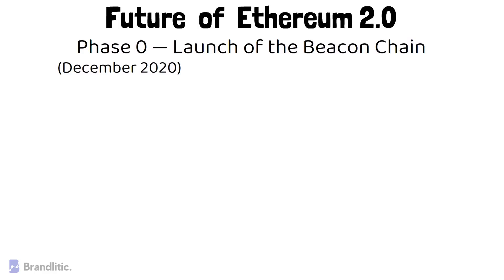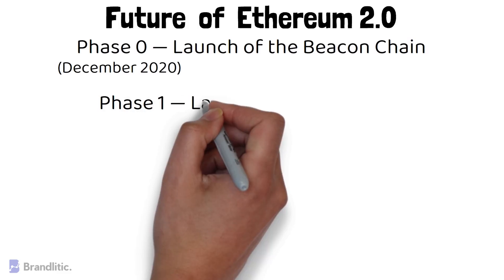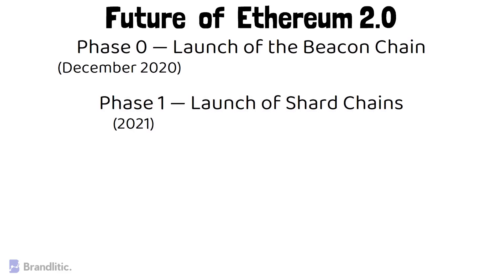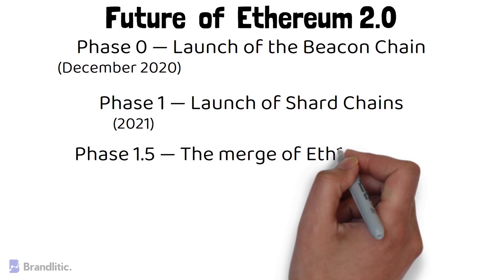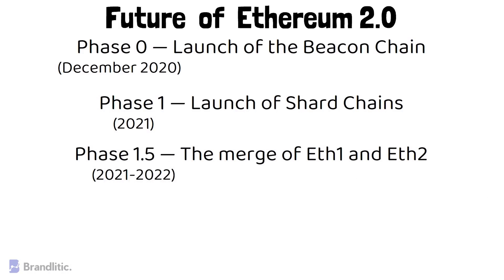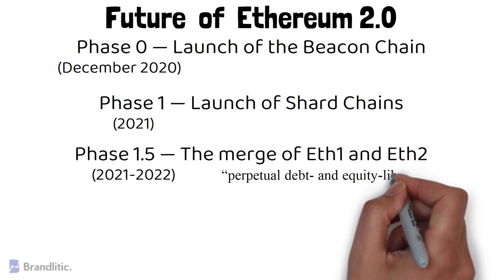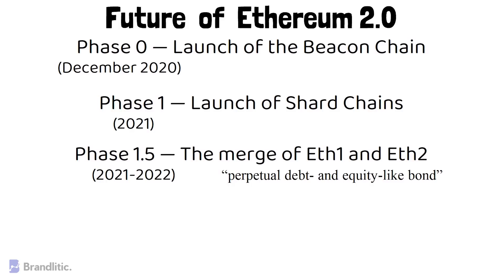Phase 0 stores the registry of validators and deploys the Proof of Stake consensus mechanism. Phase 1 is anticipated to launch in 2021, when all shard chains will be integrated — initially, 64 shards are expected to be launched. Next, Ethereum 1.0 chain will become a shard of Ethereum 2.0, regarded as Phase 1.5, where transfers will be enabled, resulting in Ethereum 2.0 resembling a perpetual debt and equity-like bond with a floating rate, as validators will be able to freely enter and exit the scheme.